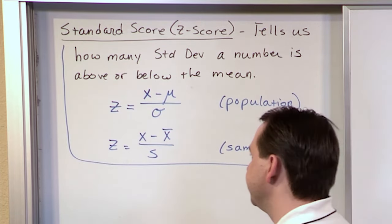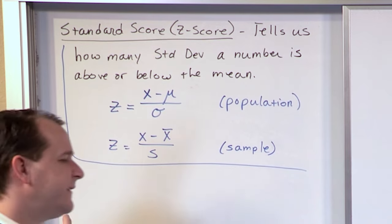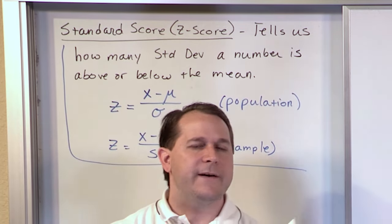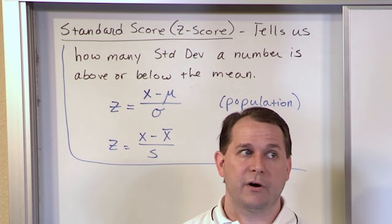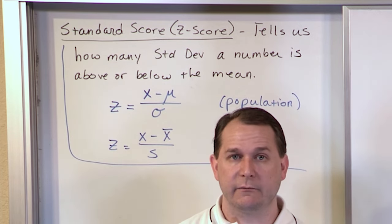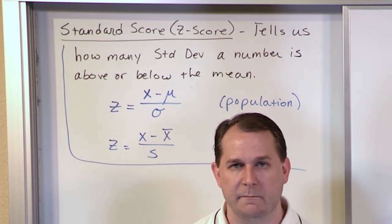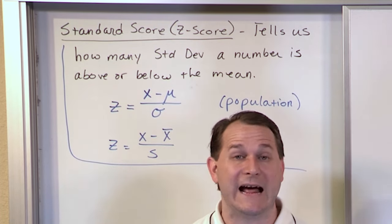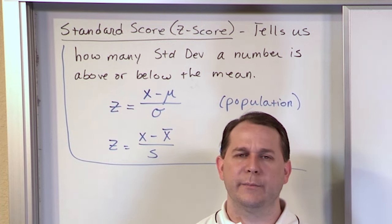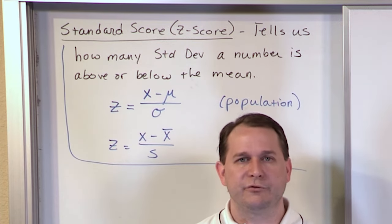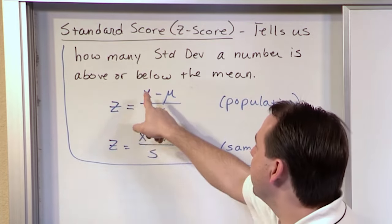So what is this telling us? Let's take the example of test scores. If I wanted to know how far above the mean I was, I would subtract my value from the mean. Let's pretend the mean is 80 — the mean grade on the test was 80, but I got a 90. I want to know how far above the mean I am, so I subtract 90 minus 80.